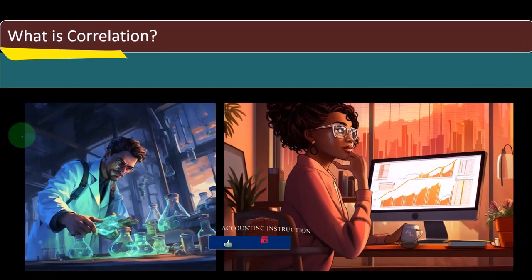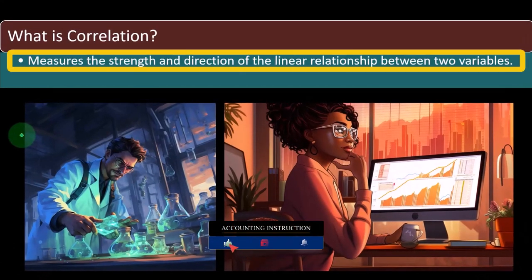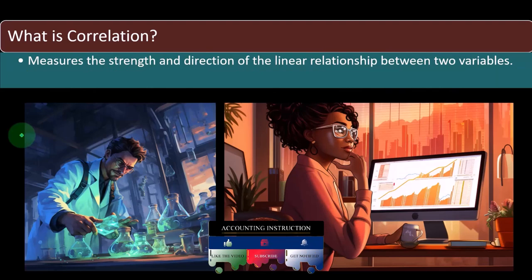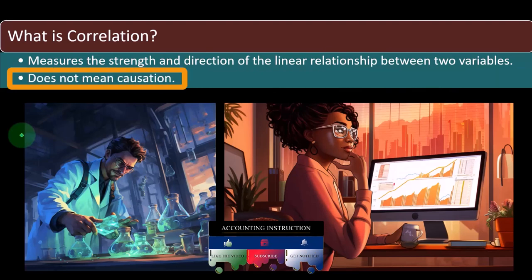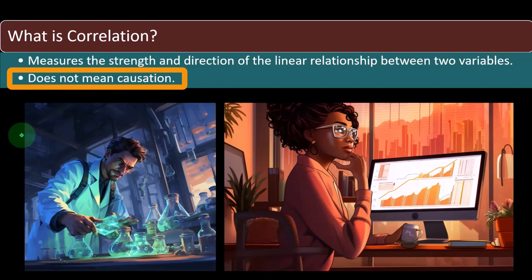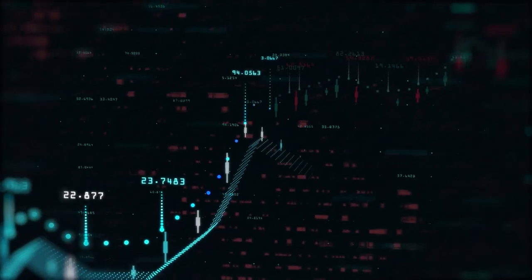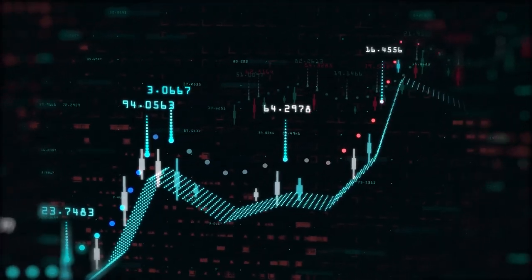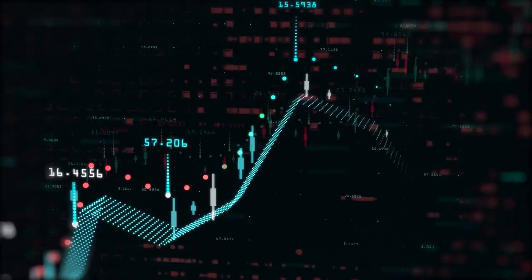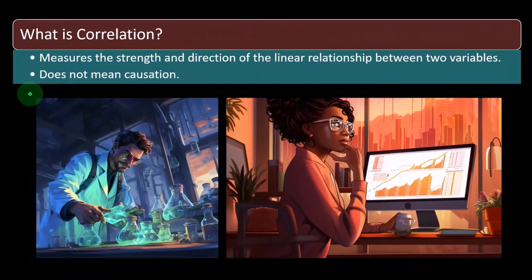First question: what is correlation? Correlation measures the strength and direction of the linear relationship between two variables. Whenever we think about correlation, we have to keep in mind the common phrase: correlation does not necessarily mean causation. However, when a phrase becomes as common as this one, it often loses some meaning — people often saying it as a kind of mantra without really thinking deeply about what it originally meant.